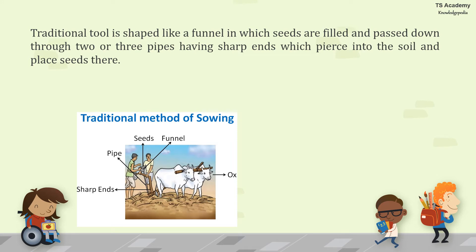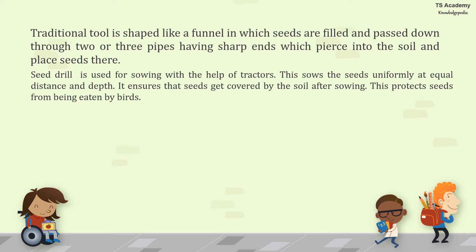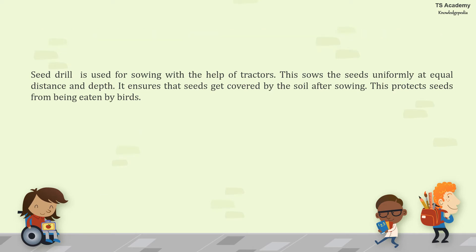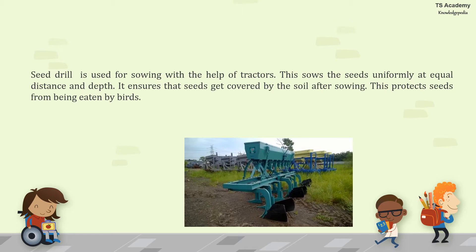How is sowing done? The traditional tool, shaped in the form of a funnel, is used for sowing seeds. The funnel is filled with seeds and passed down through two or three pipes with sharp ends, which pierce into the soil and place the seeds there. Seed drilling is used for sowing with the help of tractors. This sows seeds uniformly at equal distance and depth, ensures seeds get covered by soil after sowing, and protects them from being eaten by birds.